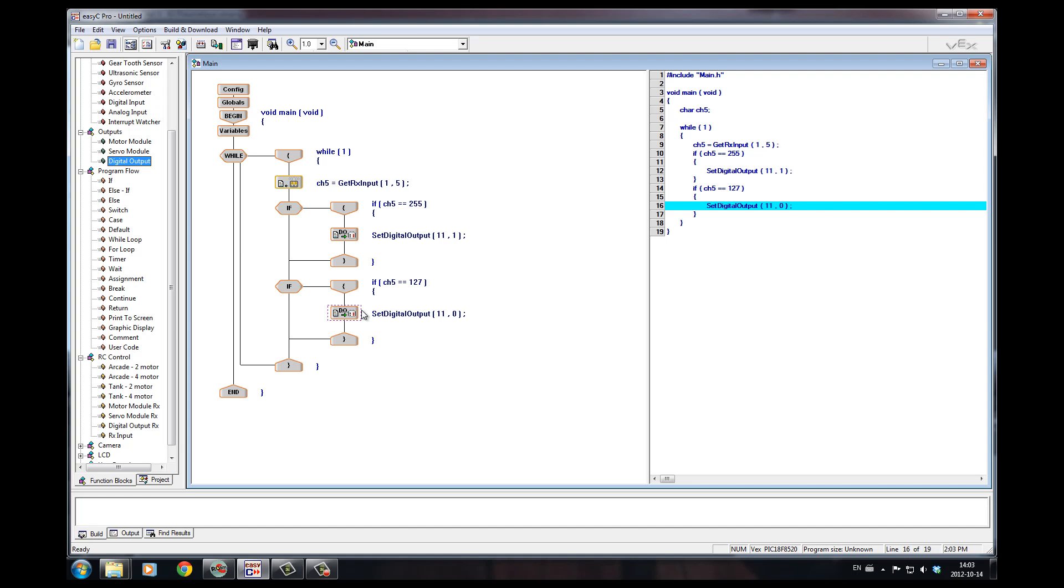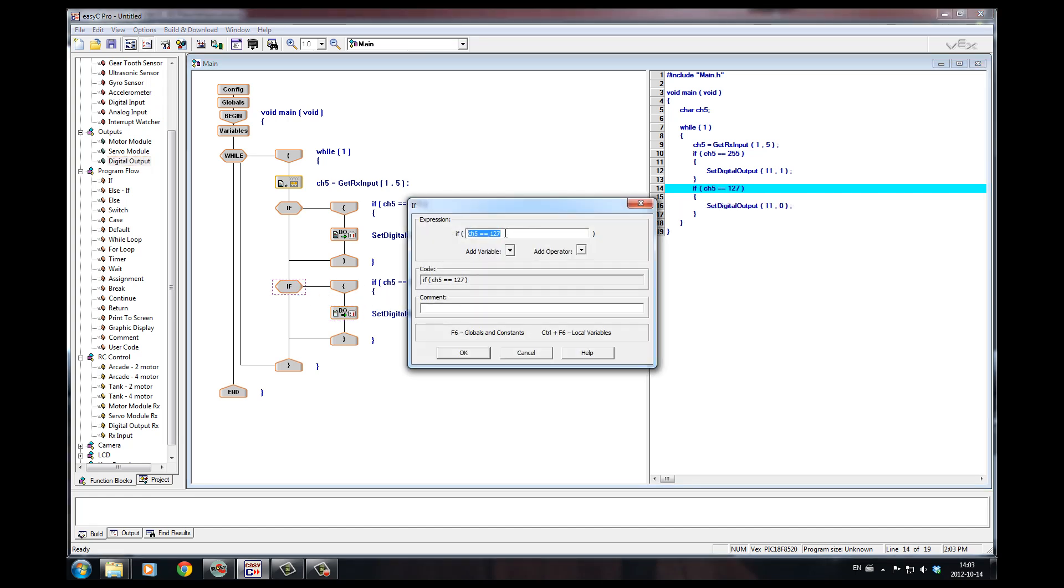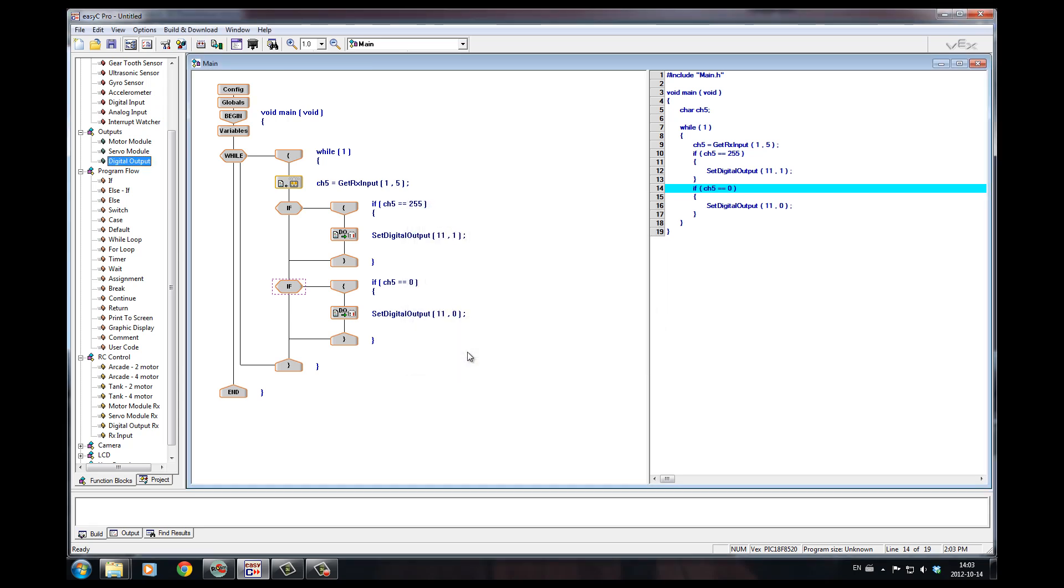If I wanted to program it so that another button closed that cylinder, then I could have changed this to 0. This way it's controlled with two buttons. And that's how you do VEX Pneumatics.